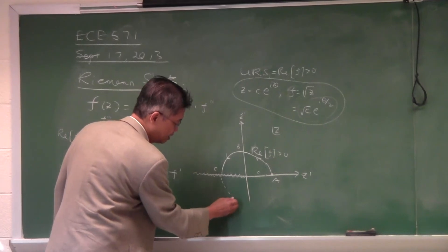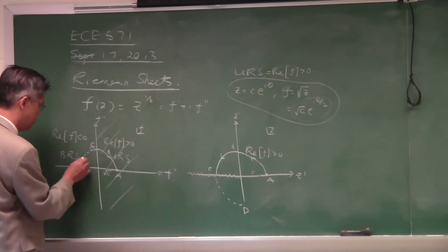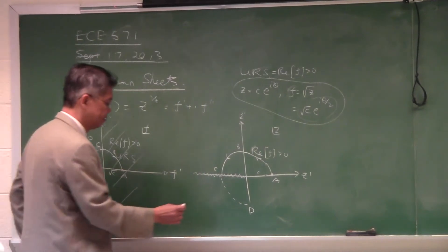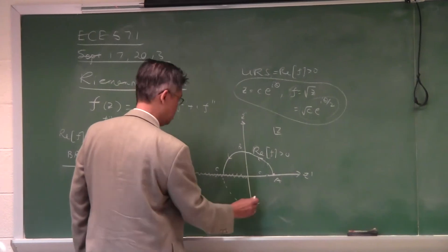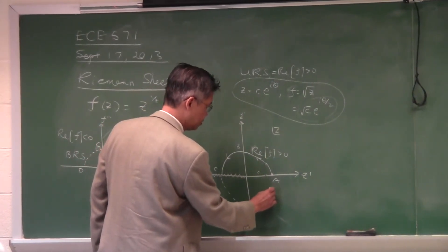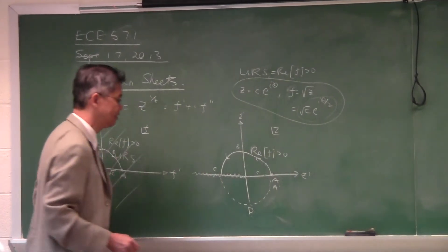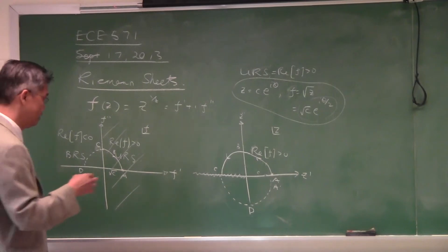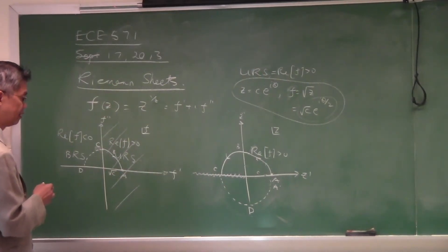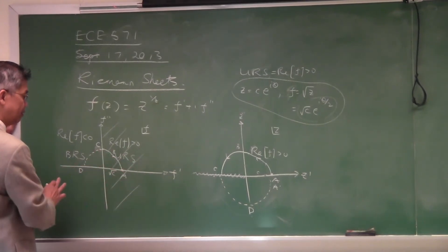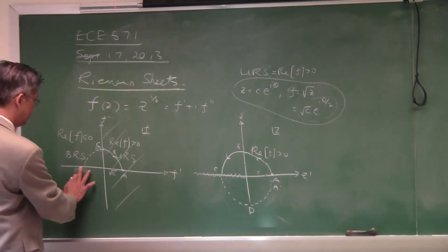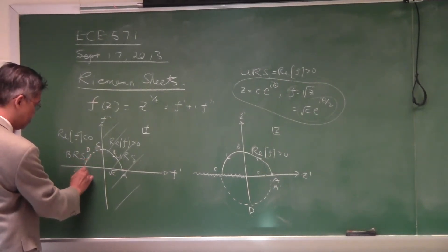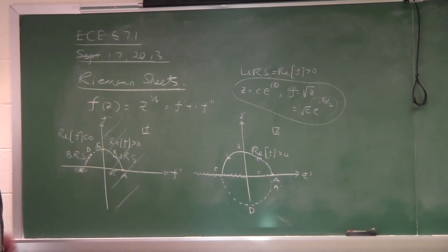If you keep marching, say you reach point D, you will map to a point with half the angle. Then you reach point A prime, but A prime is not the same as A because A prime is on the bottom Riemann sheet. That is 360 degrees, so it should be 180 degrees over here. Point D is 270 divided by 2, so it's over here. The point A prime should be over there.